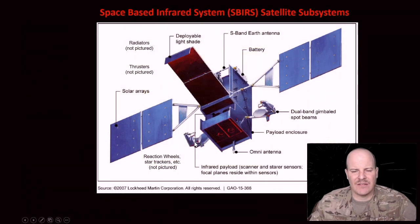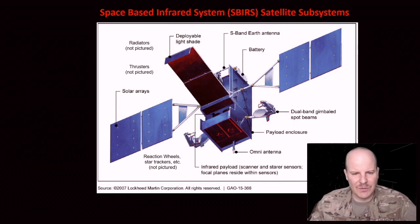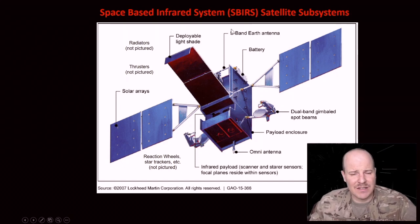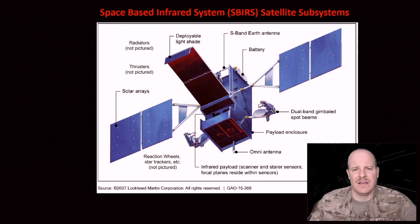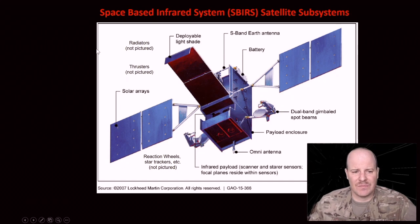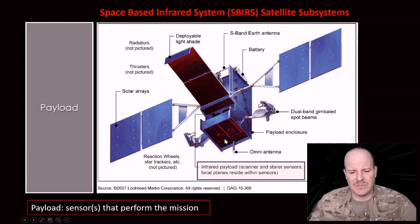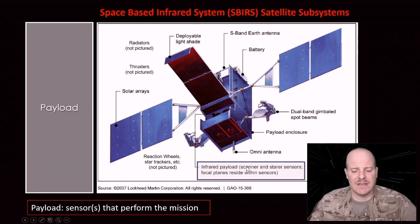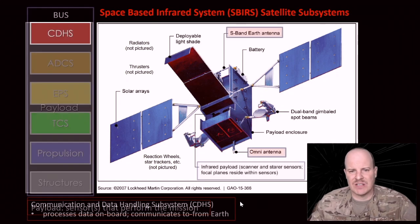Let's talk about a spacecraft now. The spacecraft I chose to show here is SBIRS, which is an operational satellite we have up in GEO. Basically, what it's looking for on the surface of the earth are hot signals — any kind of ICBM launch or anything that might be a very hot signal — and it can actually detect those things. So its primary payload is going to be essentially the sensors and camera for how it's actually detecting what that ICBM launch might be. It's the sensor that performs the mission — that's the payload for SBIRS.